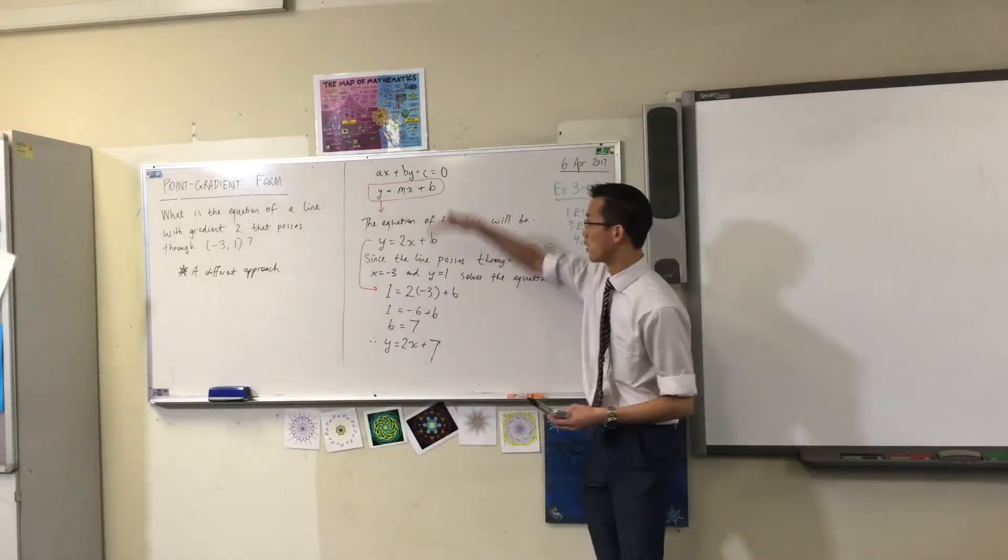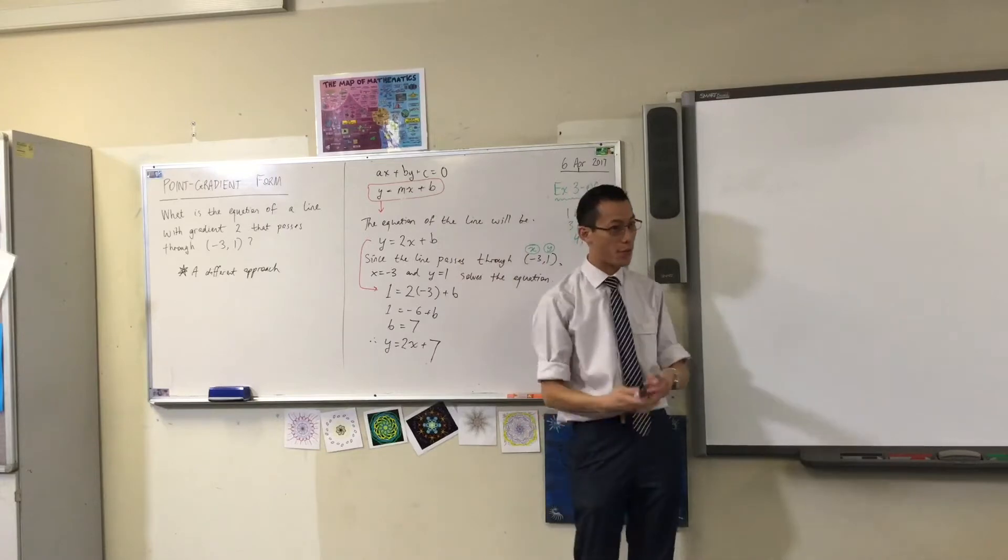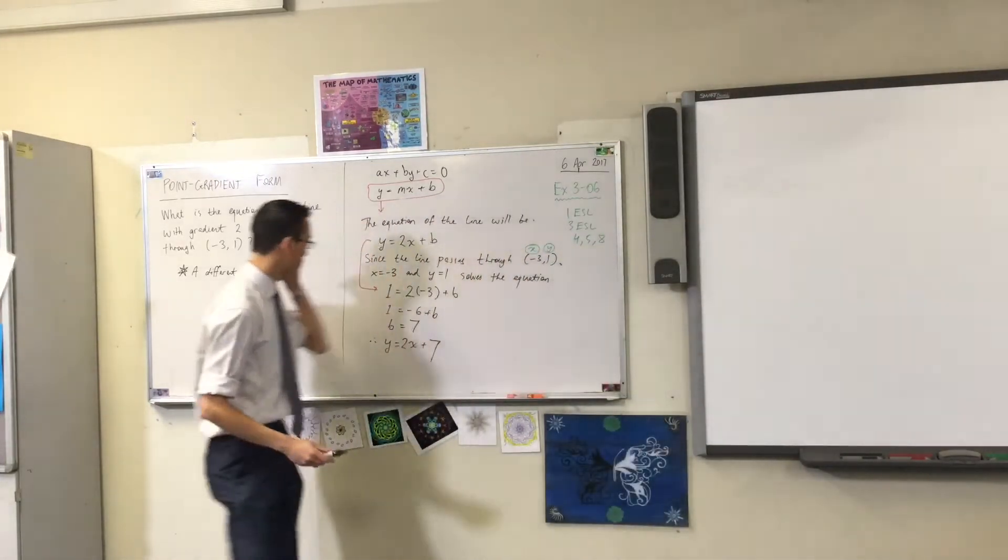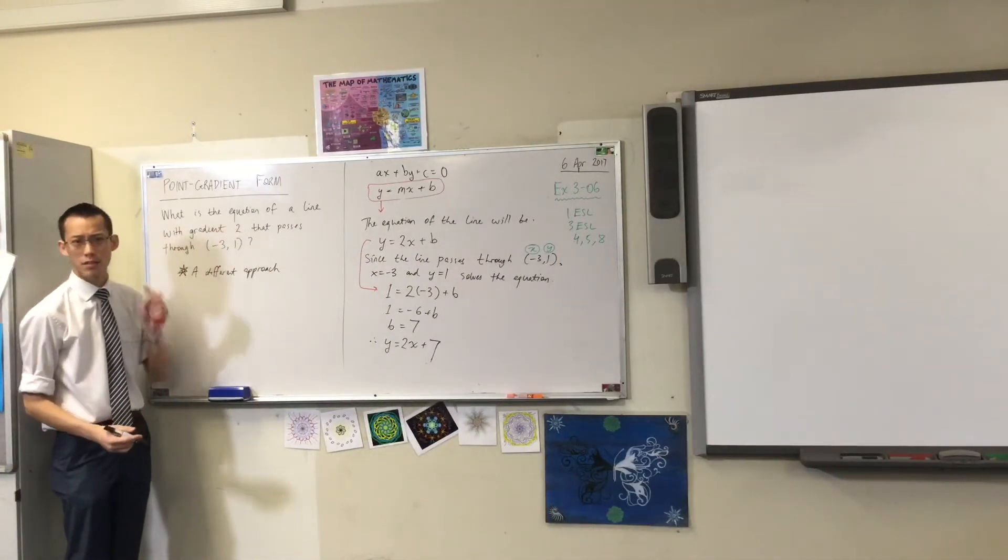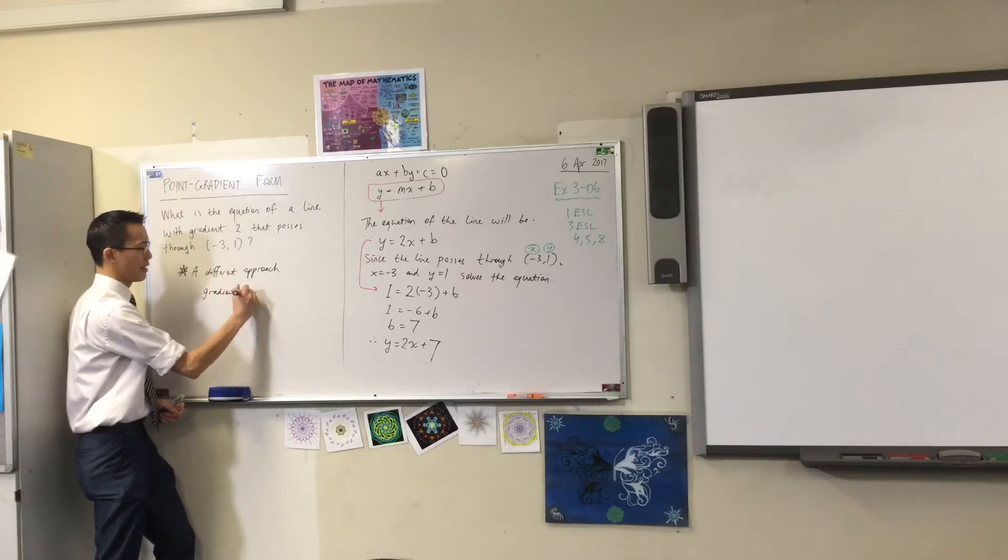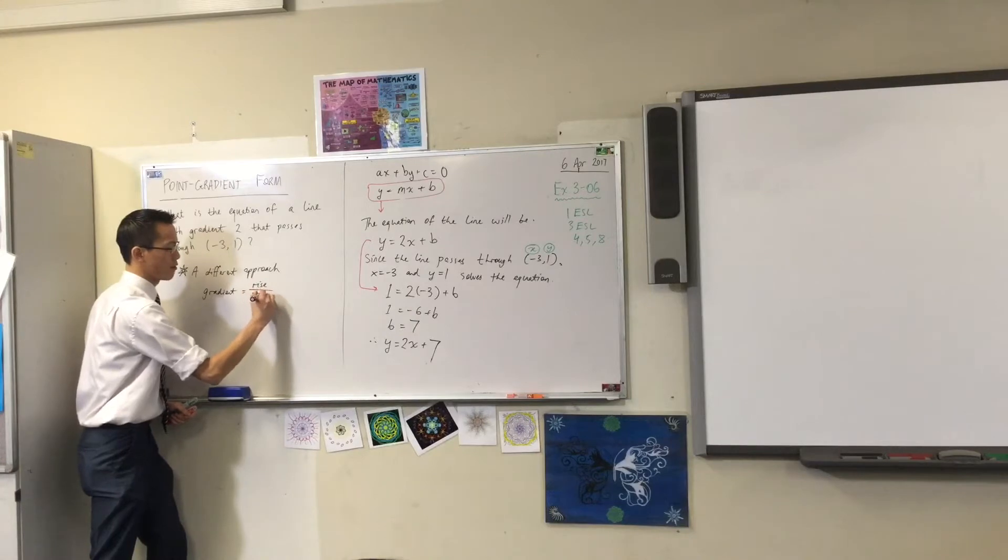We're going to develop this other form alongside general form and gradient intercept form. We're going to develop together point gradient form. Here's what I'm going to do. I'm going to notice, the gradient's important to this. Gradient, by definition, is this fraction of rise over run.